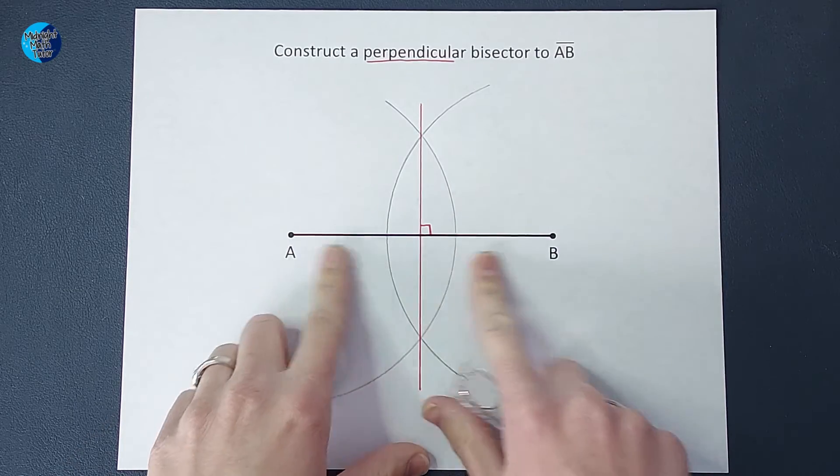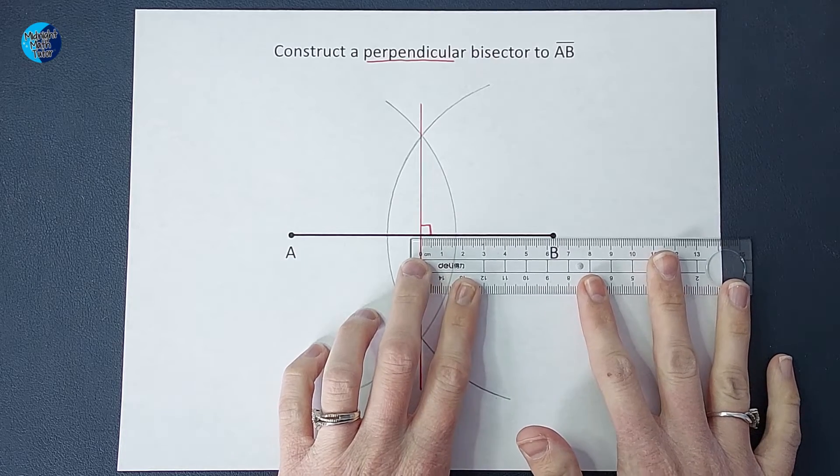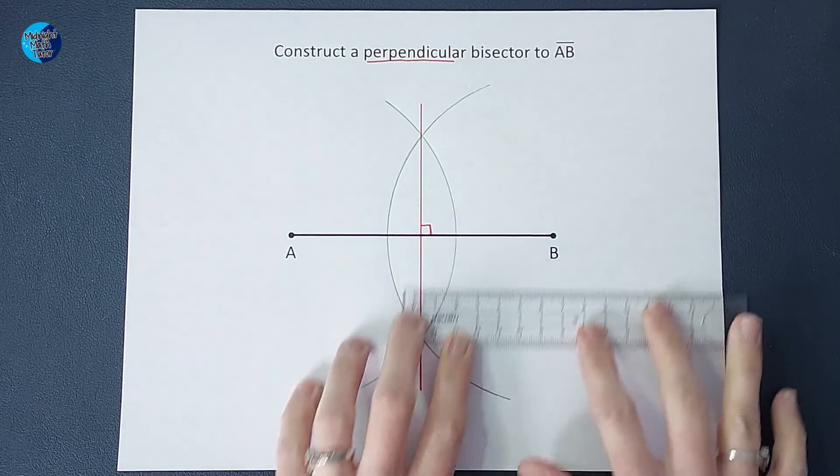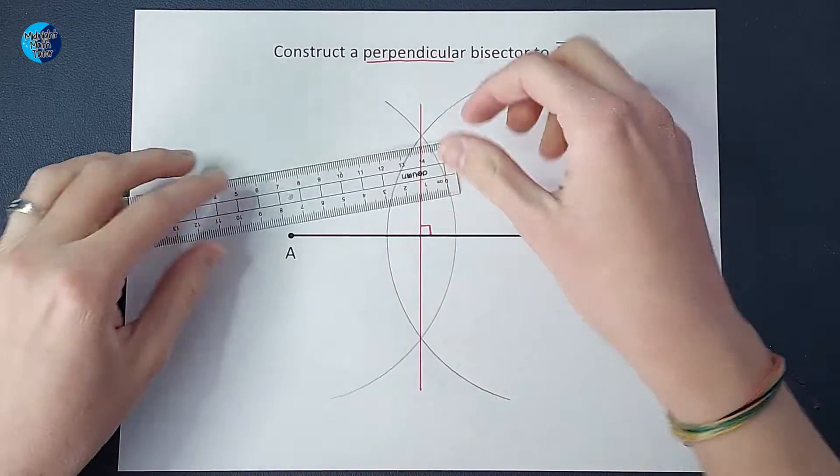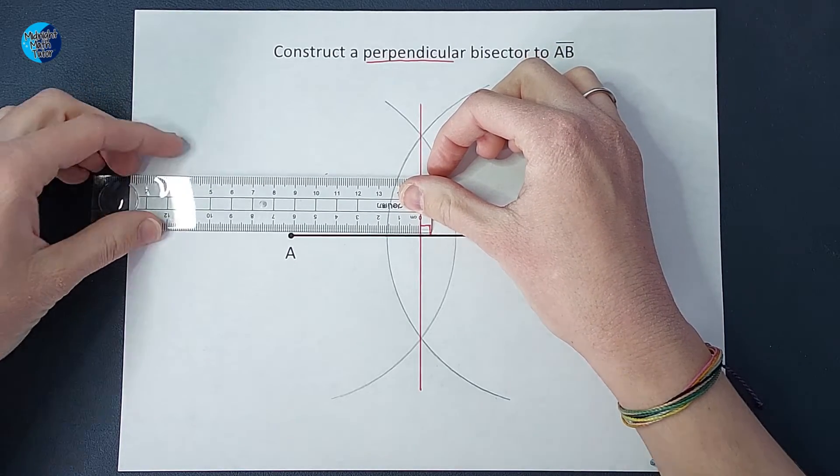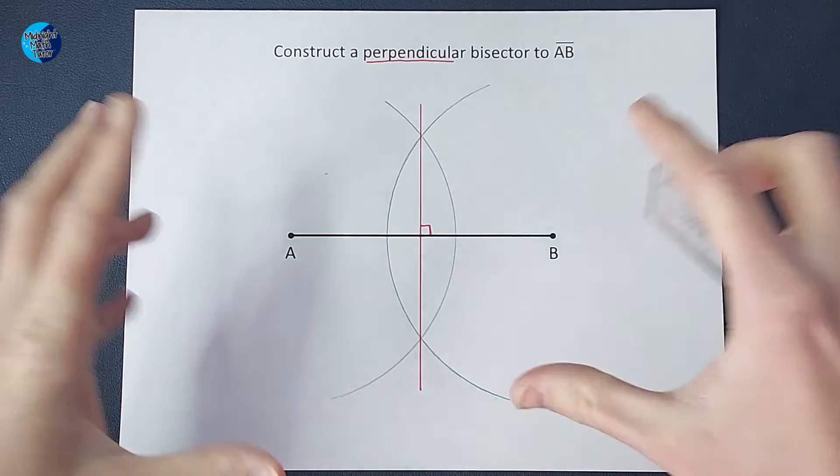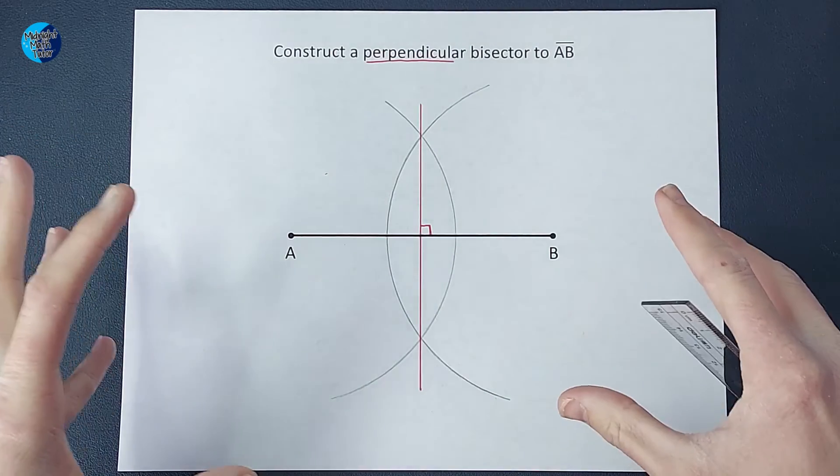You can always check to make sure that these are equal to each other with a ruler or something. So we are almost six and a half centimeters there. And almost six and a half centimeters there. Now, because I'm a human and not a machine, it might not be completely, totally, exactly half.